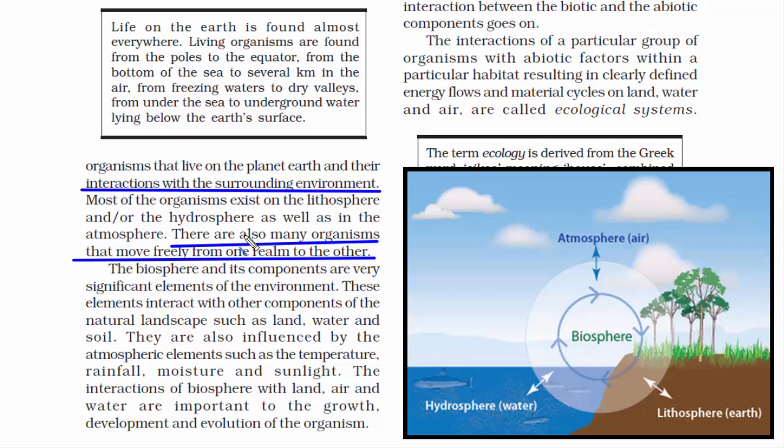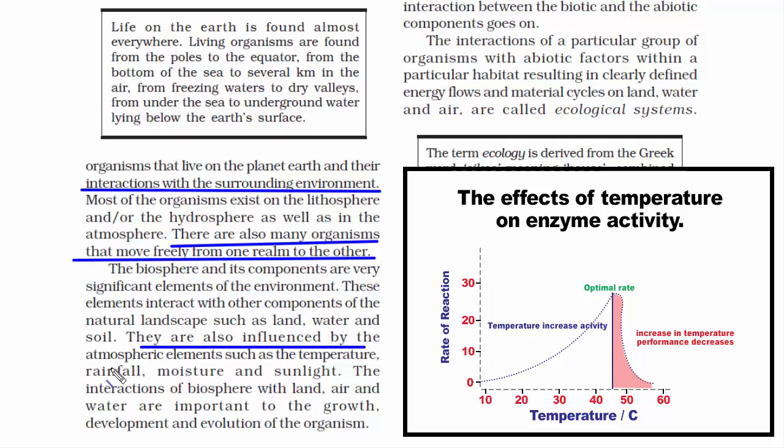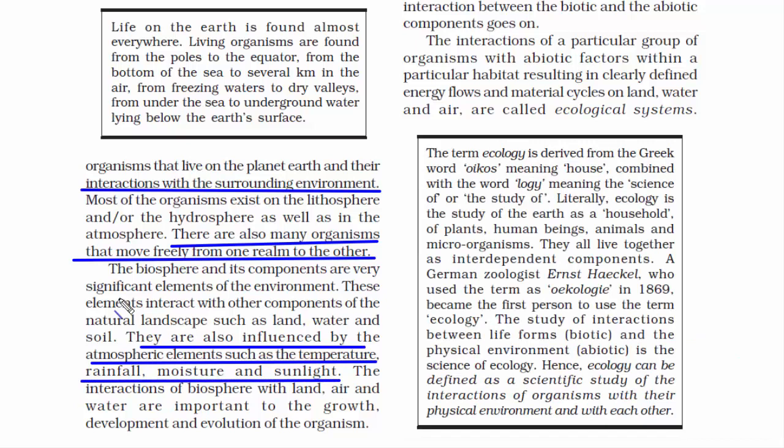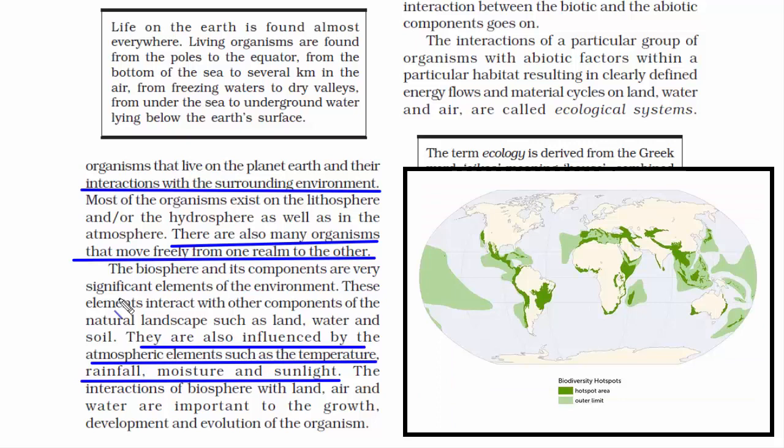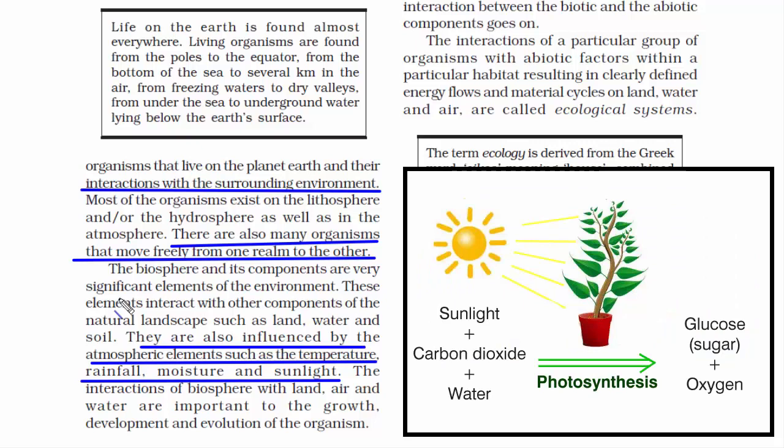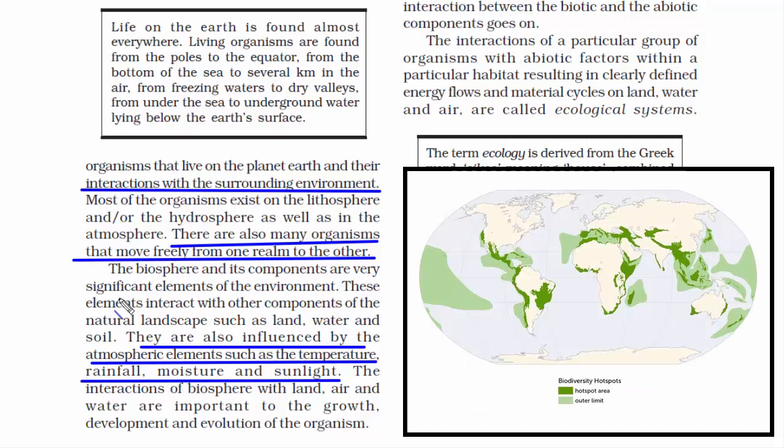Temperature, rainfall, moisture and sunlight have a great influence on living organisms. For example, as we go away from the equator towards the polar region, the temperature drops. Even sunlight drops to a certain extent. Due to that, biodiversity also decreases as we go away from the equator towards the poles, because plants need sunlight to grow. This process is called photosynthesis. That's why at the equator, you will find a lot of vegetation, but in the polar region, it is very few.